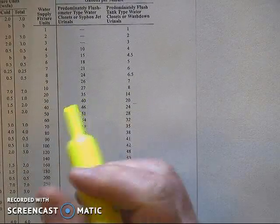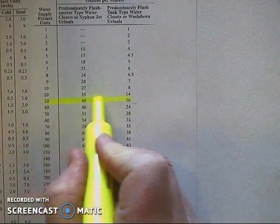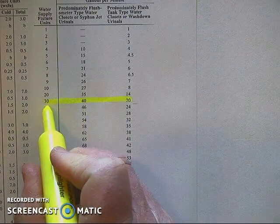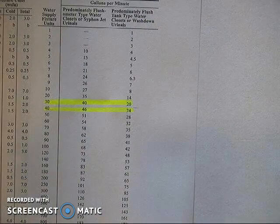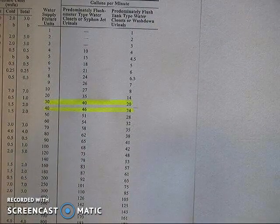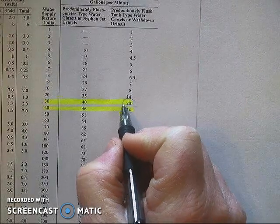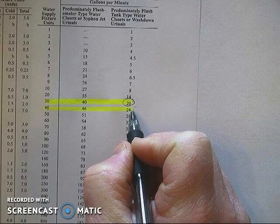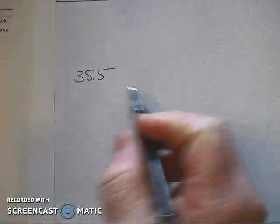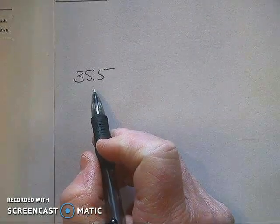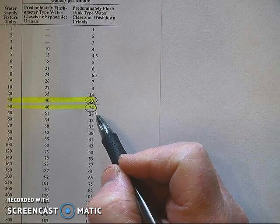What I'm going to do is quickly highlight that I do know the gallons per minute for 30 WSFU and I do know the gallons per minute for 40 WSFU. You'll notice on the right hand side 30 WSFU equals 20 GPM and 40 WSFU equals 24 GPM. So our 35.5 WSFU is going to fall somewhere in between that 20 and 24 GPMs.